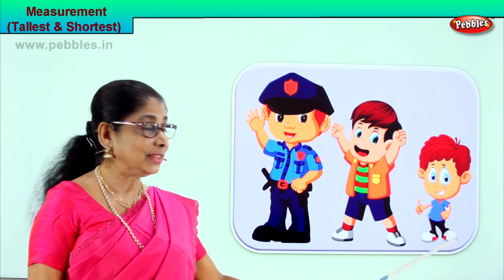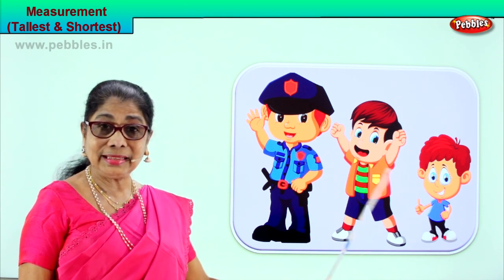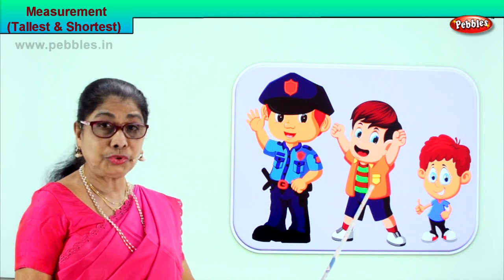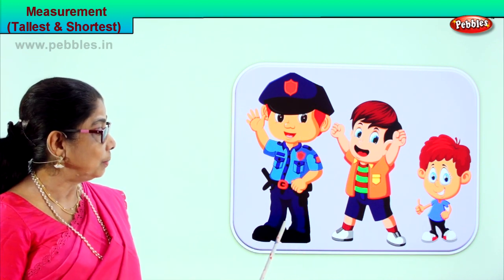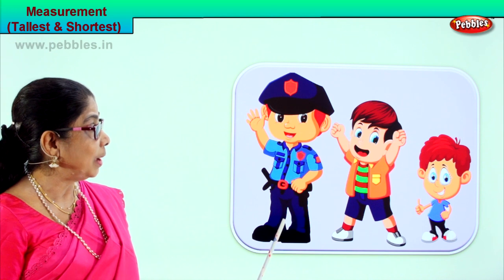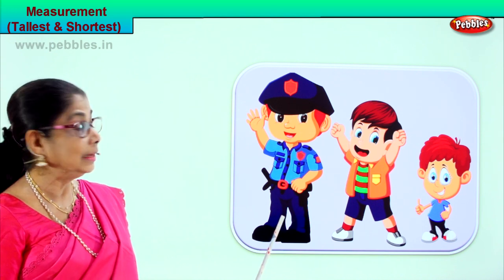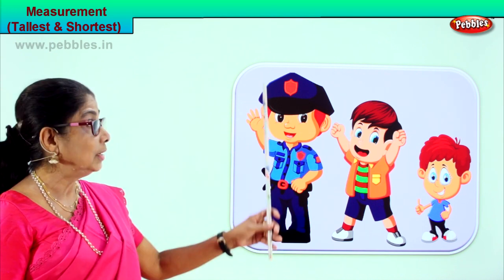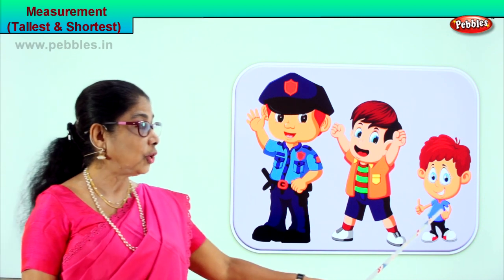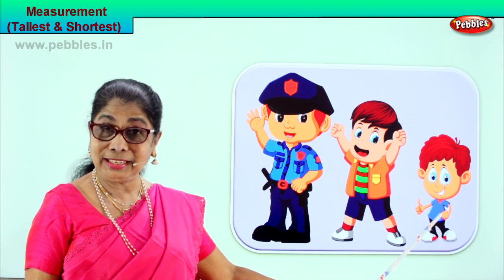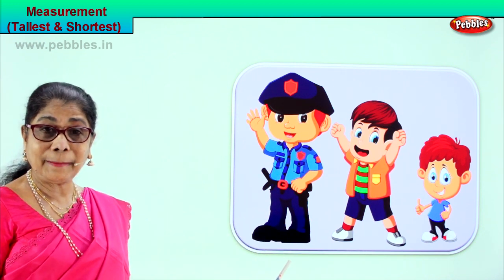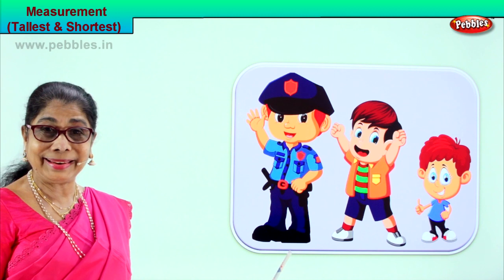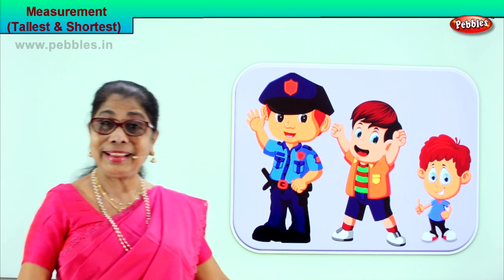If he is the shortest, this little boy is taller, and this policeman — or watchman, whoever he is — is the tallest. Tallest. Shortest. Now you will learn the two measurements: the shortest boy and the tallest man. Tallest. Shortest.